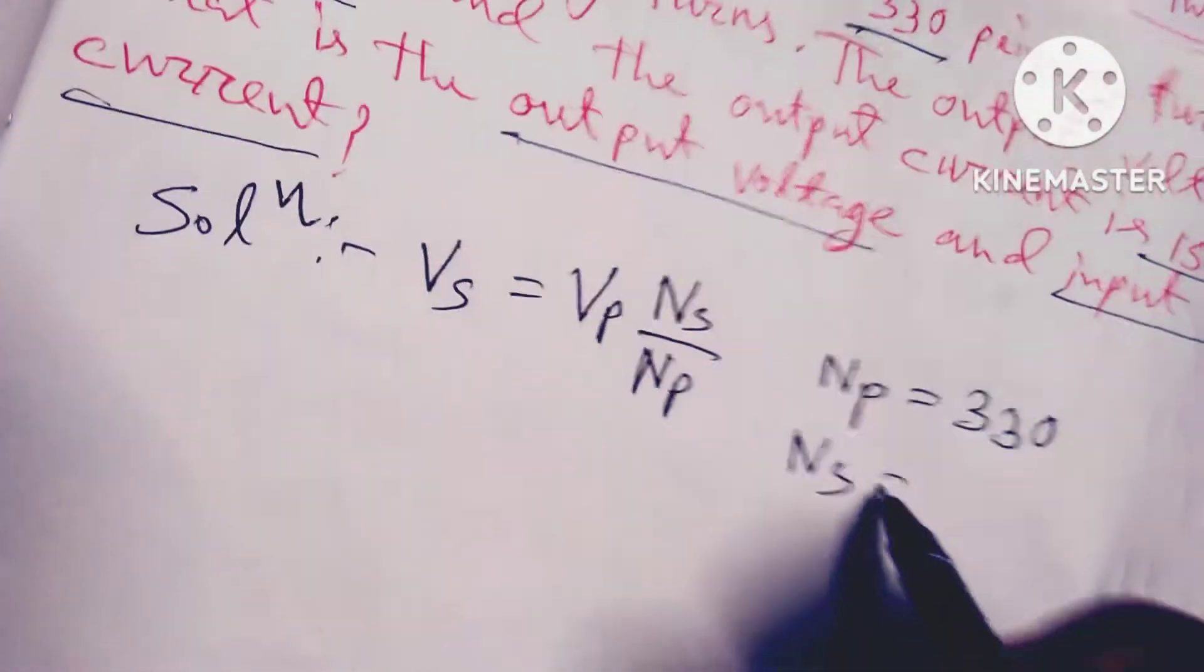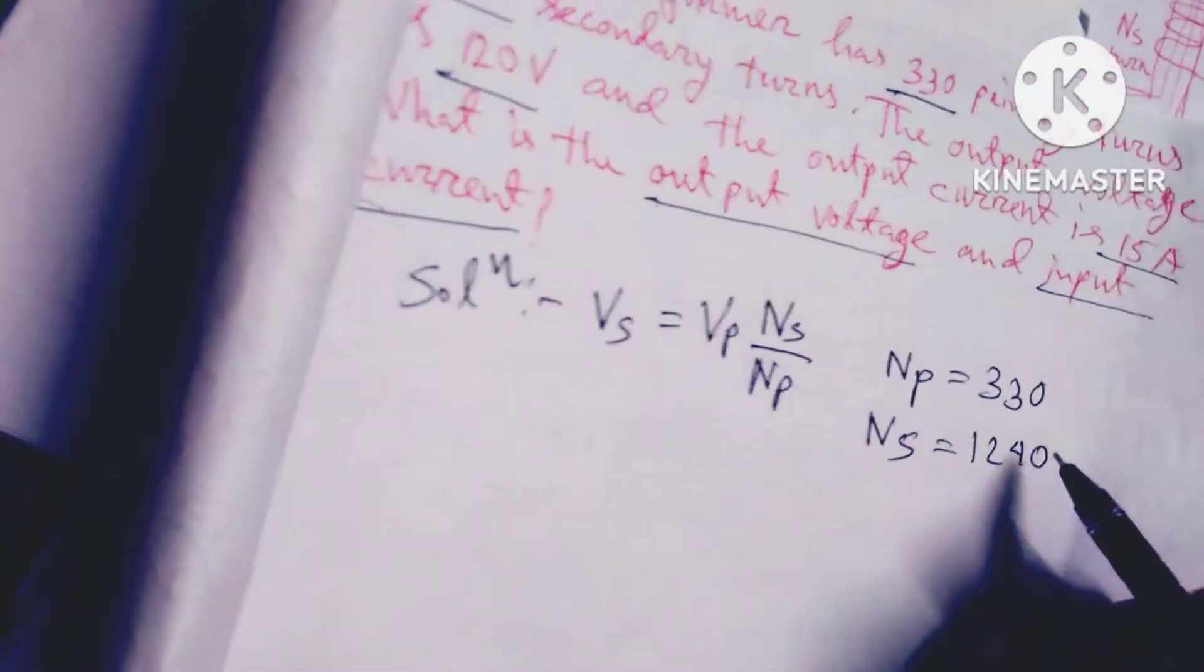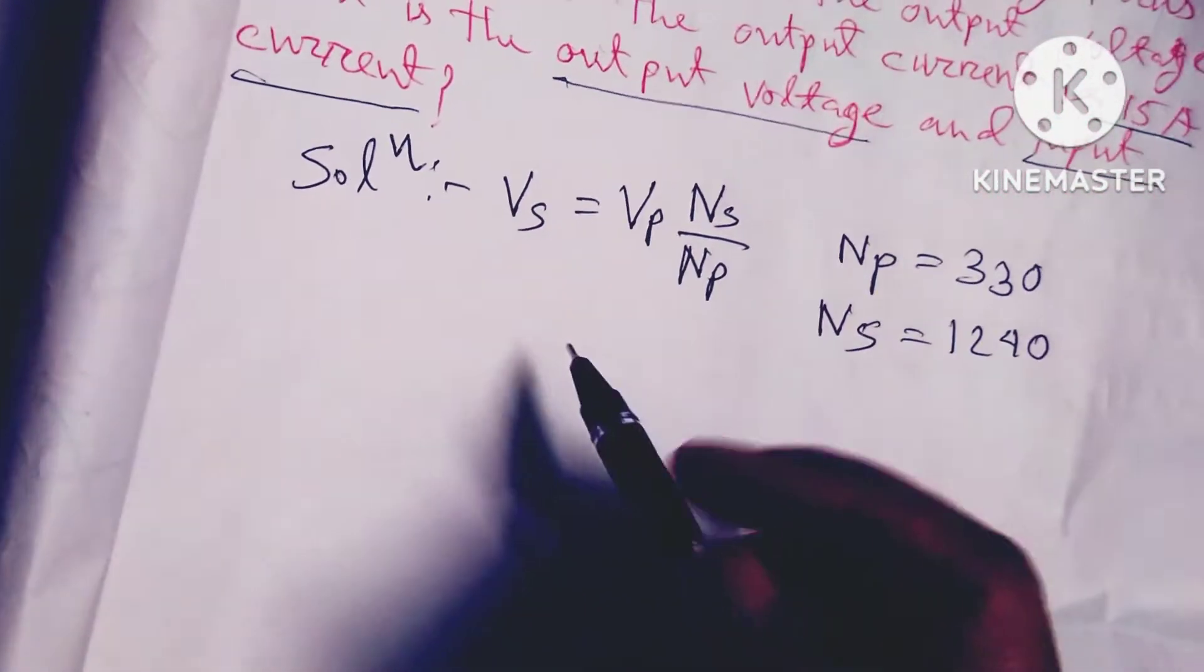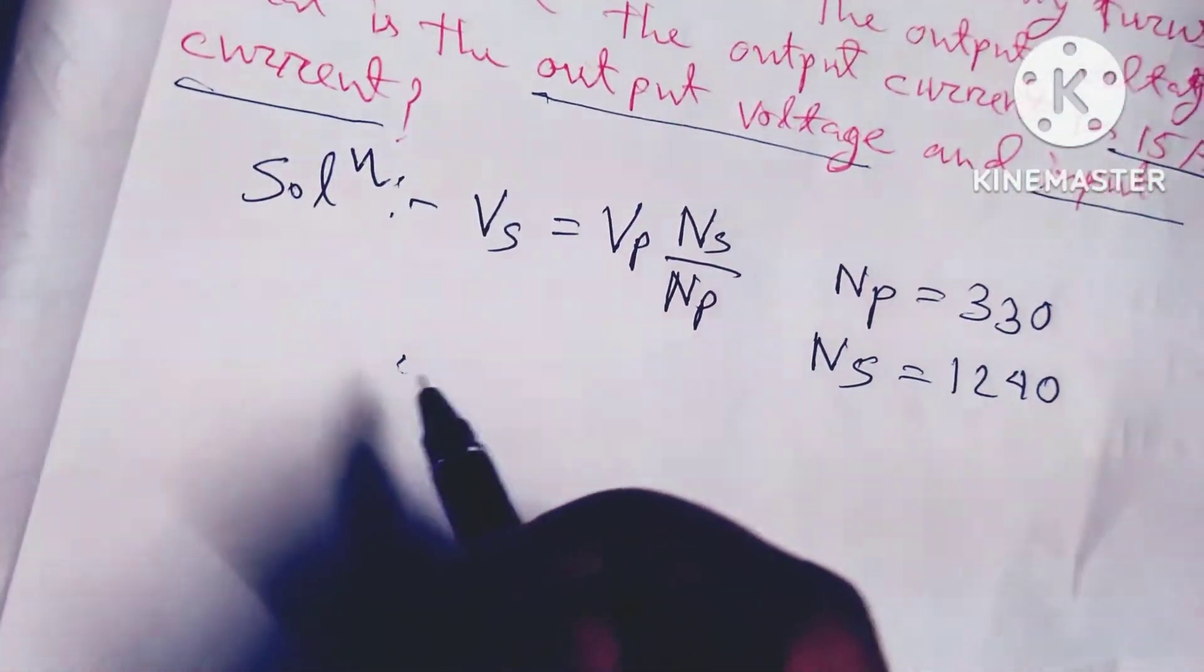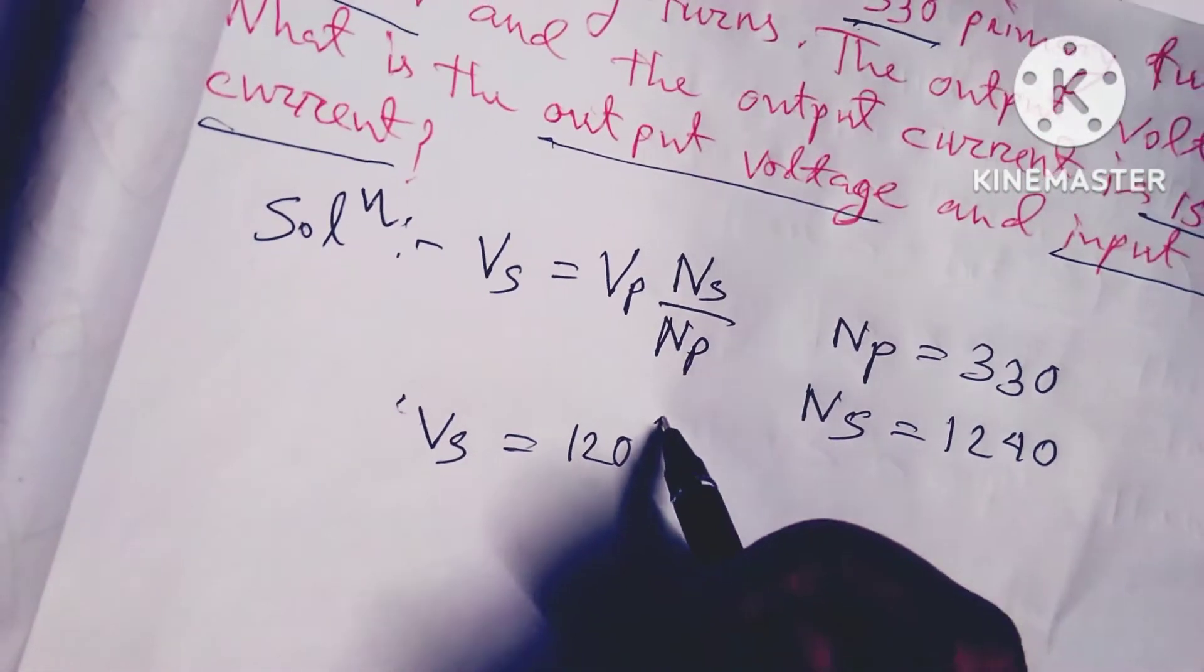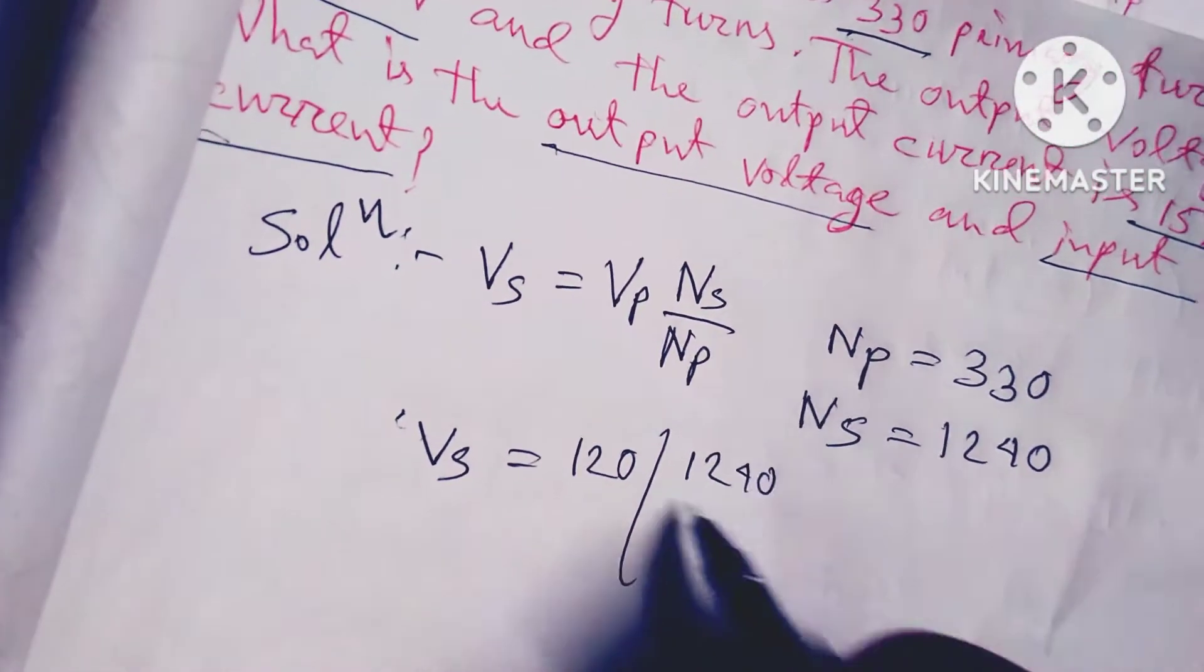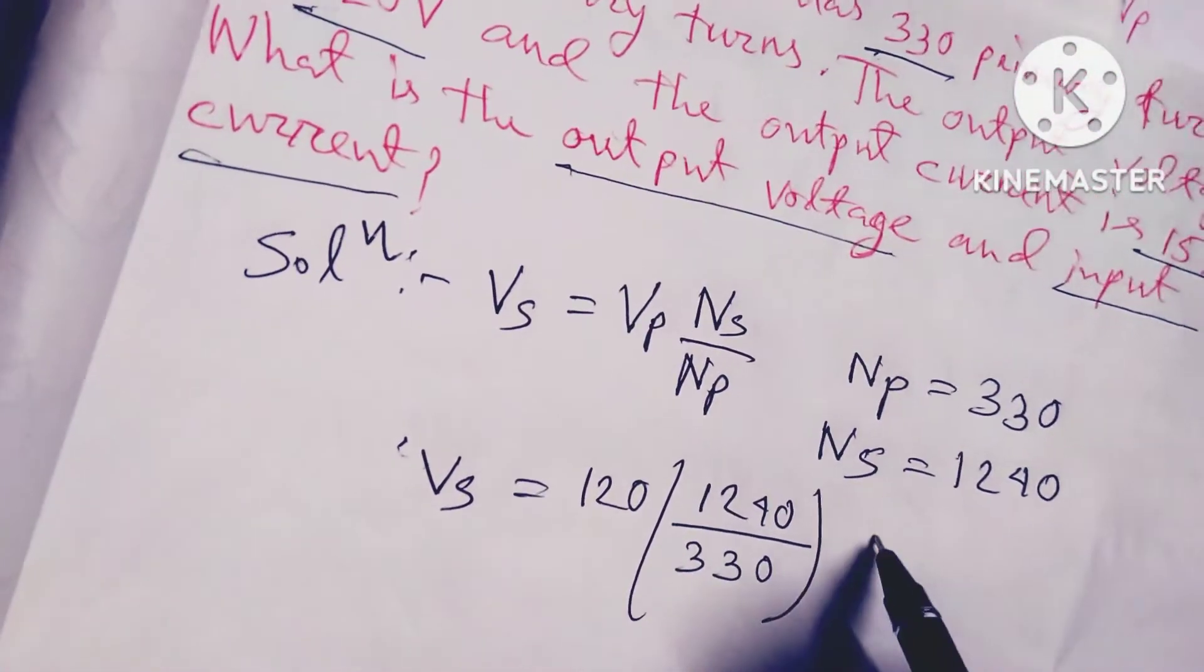Ns equals Ns is equal to 1240. So Vs equals 120 times 1240 divided by 330 equals...